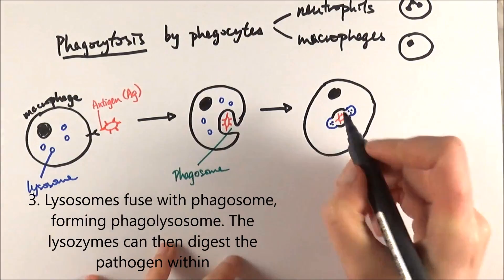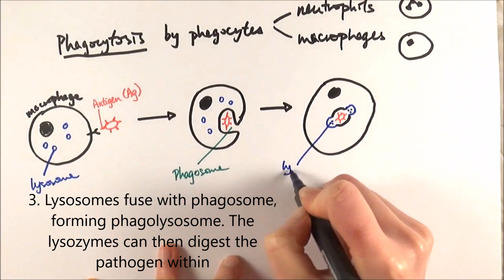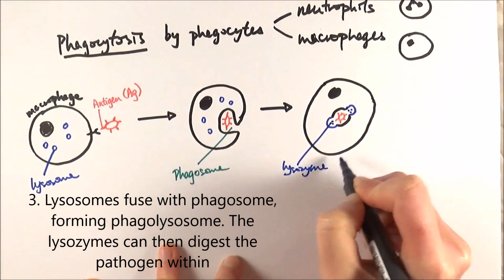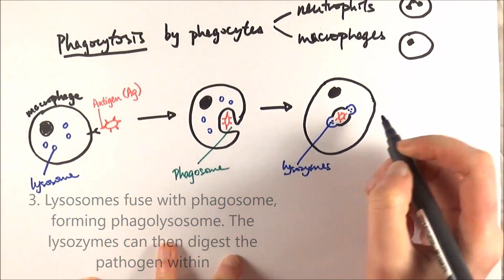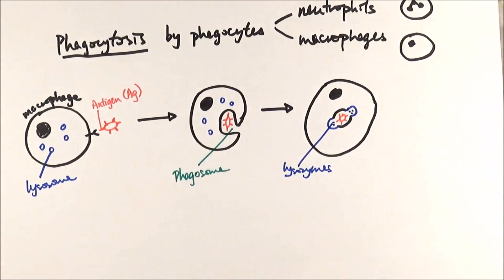So looking like this. We've got our lysosomes inside, that are going in to digest the pathogen there. So we call this entire structure the phagolysosome.